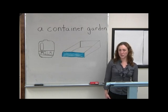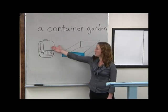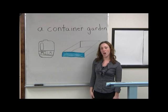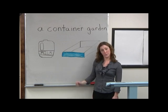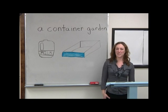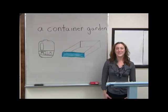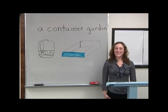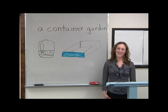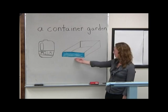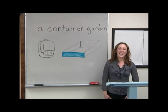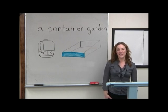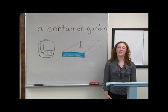an old plastic milk jug. Just cut off the top, punch holes in the bottom, and plant a small garden inside. Maybe the container is a wooden box. A container garden can be anything that can hold dirt, water, and a plant.